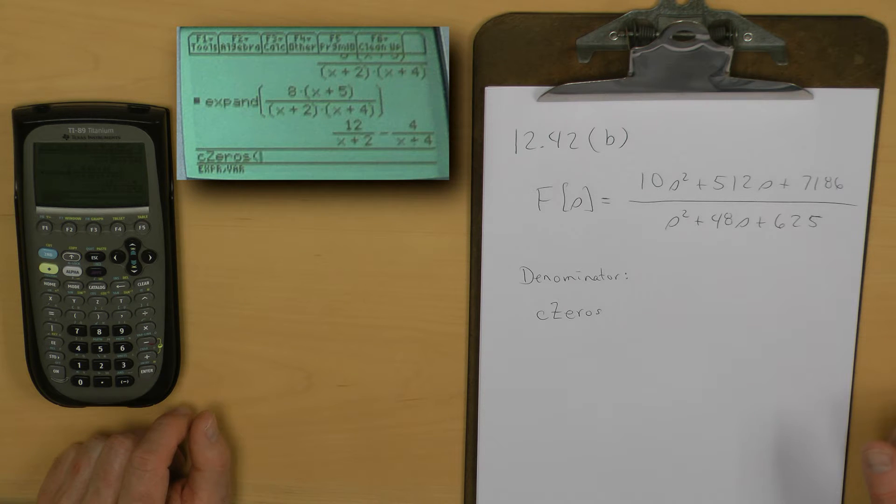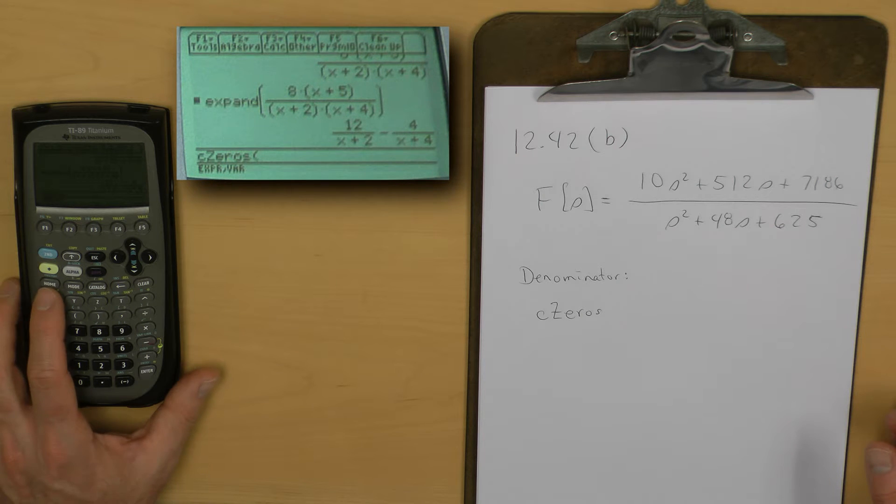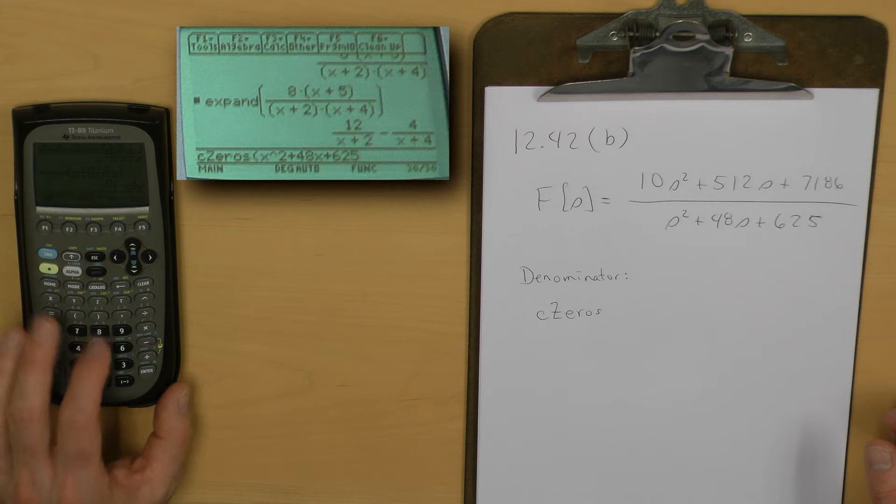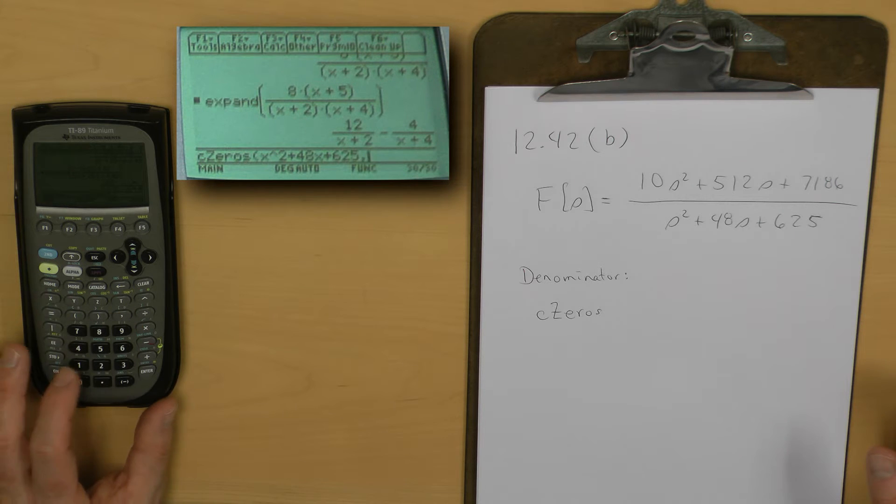I will hit enter to pull that into my command line. I now will input the denominator polynomial. Instead of S, I will use X, so I now have X squared plus 48X plus 625. In this complex zero command, it's finding the zeros of an expression, a polynomial in X, and so I have to say my polynomial is a function of X. Following that polynomial with a comma X, I'll close the parentheses.